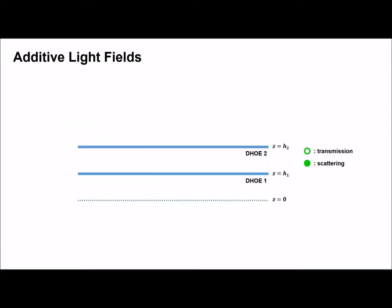We stack two DHOE layers to generate independent light fields. First, probe wave 1 passes through DHOE 2 and is scattered by DHOE 1. On the other hand, probe wave 2 is diffused only by DHOE 2. In short, two independent light fields are generated from DHOE 1 and 2. If the illumination sources are incoherent, the light fields are merged into a single light field by addition. Consequently, four-dimensional light field could be reconstructed.